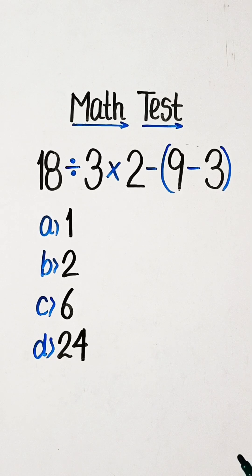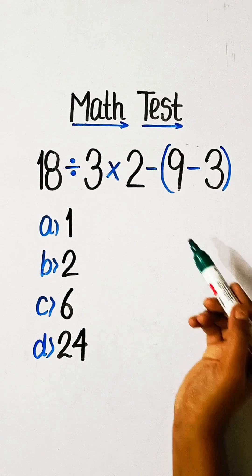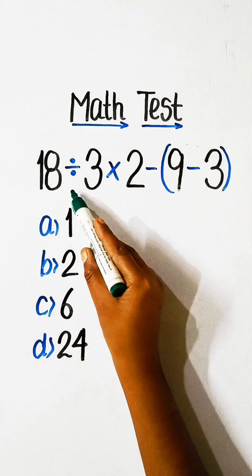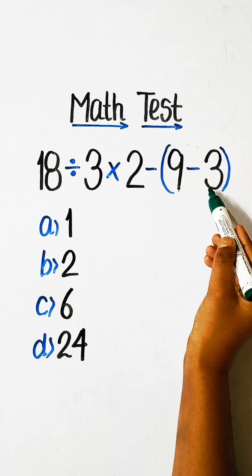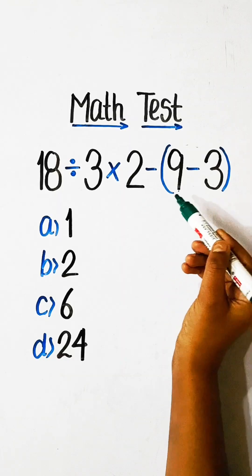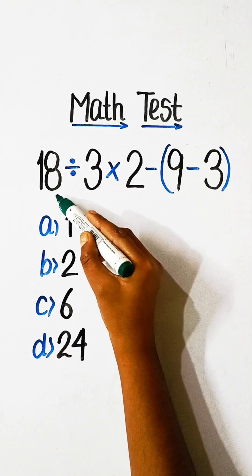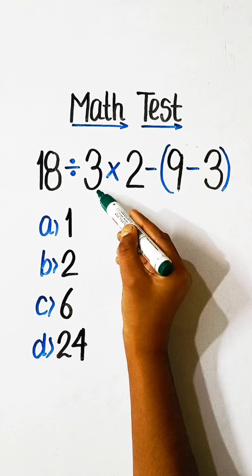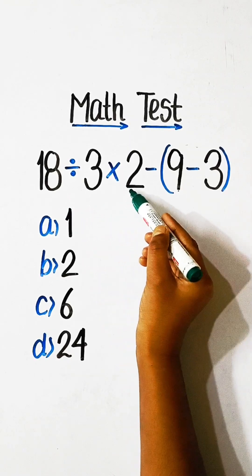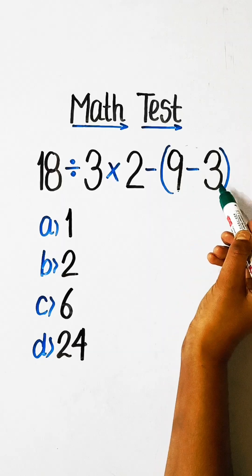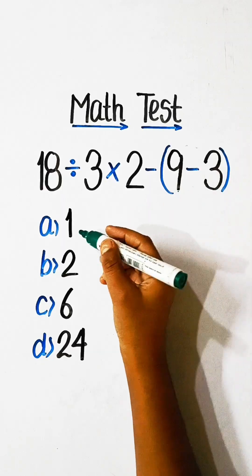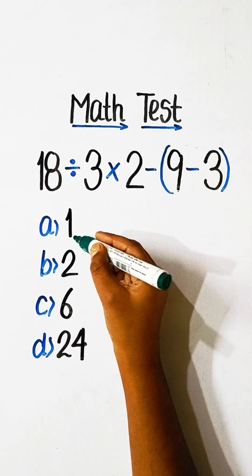Hello friends, welcome back to my channel. In this video, we will solve this math problem: 18 divided by 3, multiplied by 2, minus 9, minus 3 equals to what?